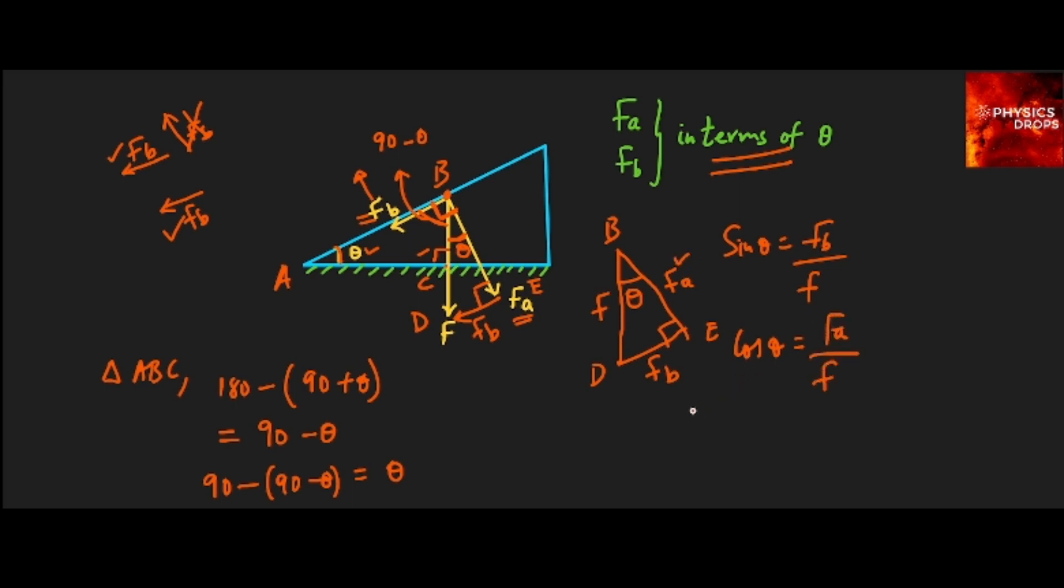And cos theta will be adjacent side FA divided by F. So from these two we can get FA is nothing but F cos theta and FB will be F sine theta. So we have the values of FA and FB in terms of this angle theta. Thank you.